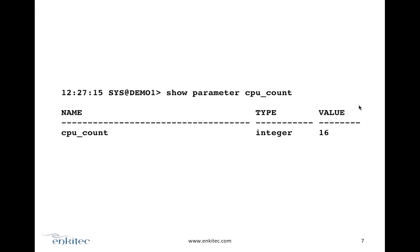Let's start with the database parameter called CPU count. The CPU count is the number of CPUs your database is using — essentially the logical CPUs on your database server. This is the parameter you set when you do instance caging. If you set the CPU count to four, then that instance will only make use of four CPUs out of, say, 16.